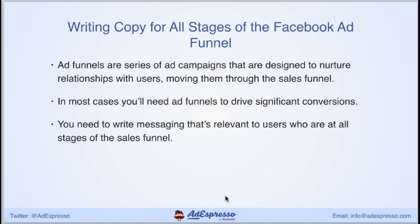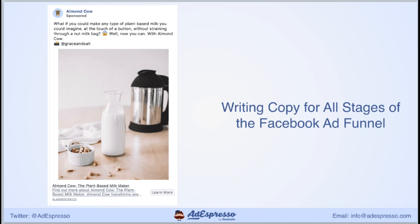Let's look at two different ads from a company called Almond Cow, each targeting users at different stages of the sales funnel. The first ad says: 'What if you could make any type of plant-based milk you could imagine, at the touch of a button, without straining through a nut milk bag? Now you can with Almond Cow.' This is clearly designed to introduce the product, explain what you can get out of it, and establish brand awareness. This is what you want to show an audience who has never heard of you or needs a reminder of what you can offer.